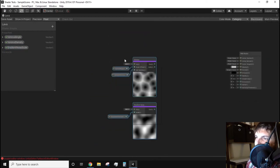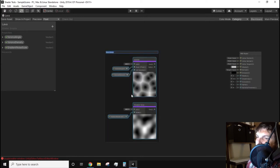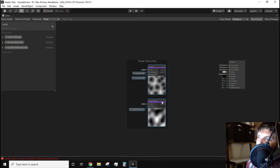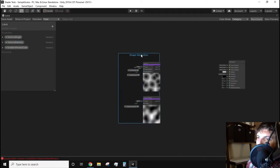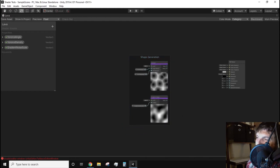One nifty feature that shader graph has is that we can group selected nodes together and give it a title to help organize our graph. Left mouse click and drag your mouse over the nodes that control the noise creation. If you miss a node with this method just hold down control and left mouse click the missed nodes. With all the needed nodes highlighted just right mouse click and then select group selection. It'll ask for a name which I'll call it shape generation.